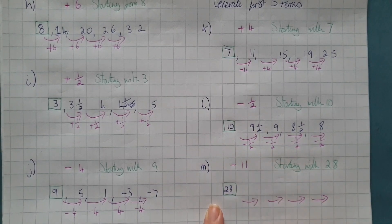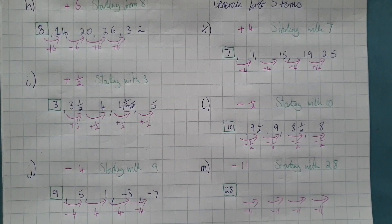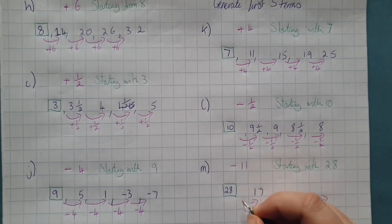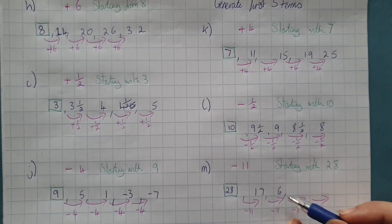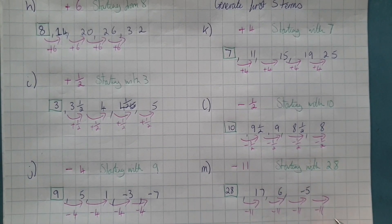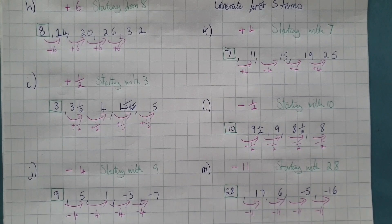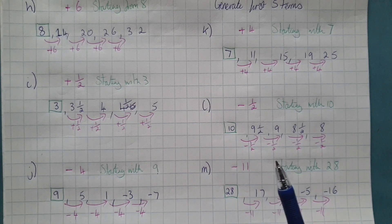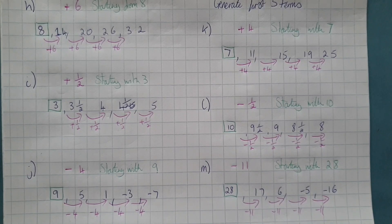Final one: starting with twenty-eight and every time we are subtracting eleven. Twenty-eight minus eleven takes us down to seventeen, seventeen minus eleven takes us down to six, six minus eleven — using six of those up takes us to zero, with five still to go down — so we're at negative five, and negative five minus eleven takes us to negative sixteen. One, two, three, four, five — we've generated the five terms. Whenever we're generating or describing sequences, we need to clearly show where you're starting from, what the steps are, and make sure we're showing enough terms.